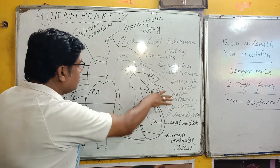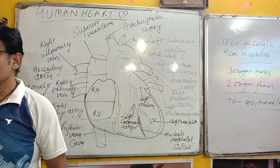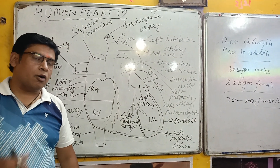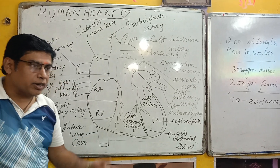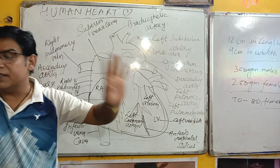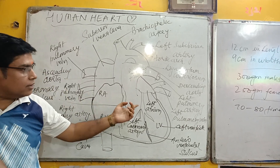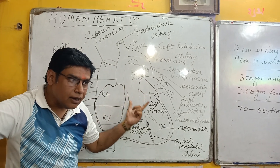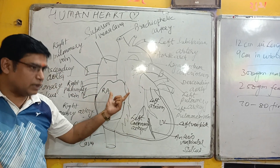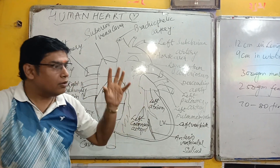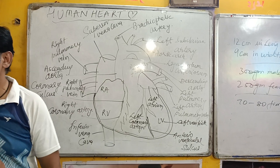Looking at the heart externally, the human heart is made up of four chambers — two upper chambers called auricles and two lower chambers called ventricles. The auricles have thin walls and the ventricles have thick walls.